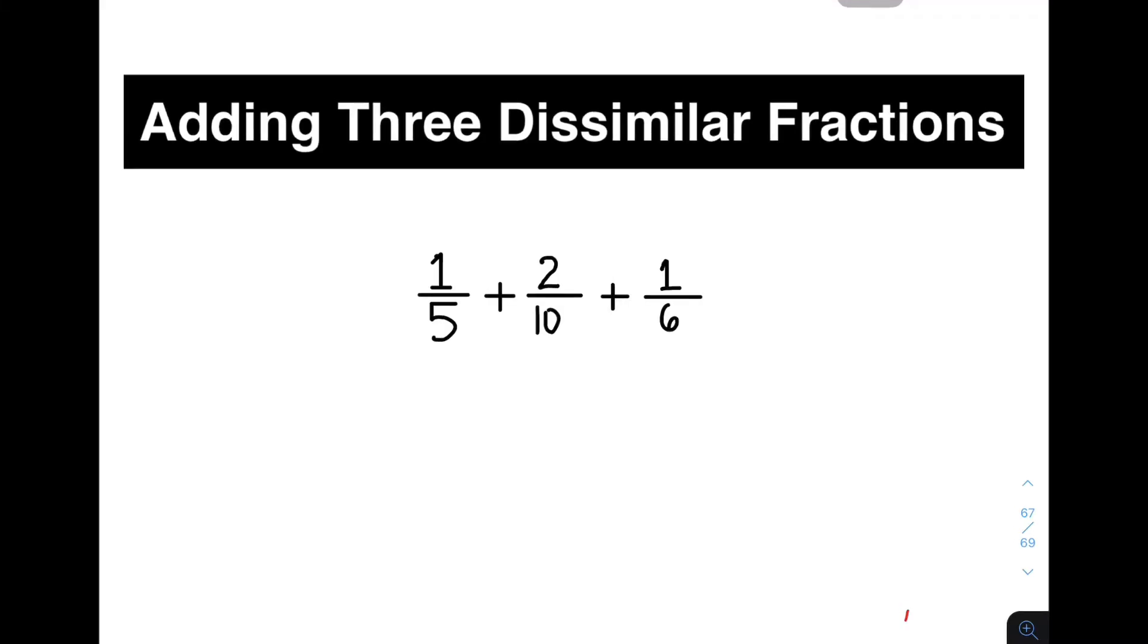Now, given the fractions 1 over 5 plus 2 over 10 plus 1 over 6, the first thing you need to do, since they have different denominators, you need to find the LCM or the least common multiple of these numbers. So we need to find the LCM of these numbers. Again, least common multiple.